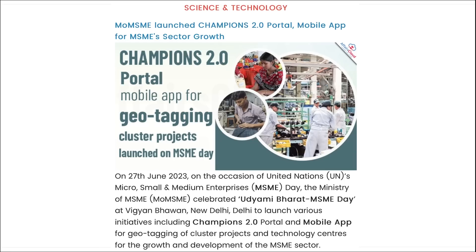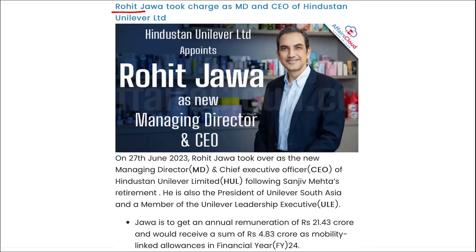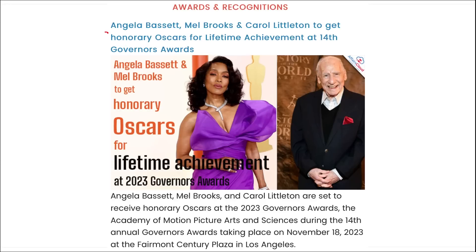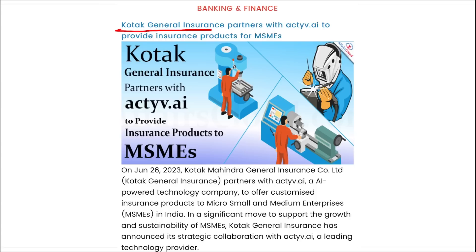Additional current affairs for revision: National Insurance Awareness Day is observed on 28th June. Ministry of MSME launched Champions 2.0 portal and a mobile application for MSME sector growth. Rohit Jawa has taken charge as Managing Director and CEO of Hindustan Unilever Limited. RBI approved the appointment of AP Hota as Federal Bank's part-time chairman. Angela Bassett, Mel Brooks, and Carol Littleton were honored with the honorary Oscar for lifetime achievement at the 14th edition of the Governor Awards.